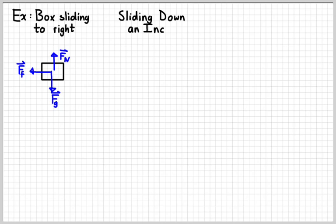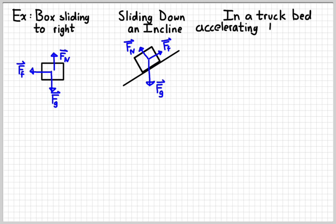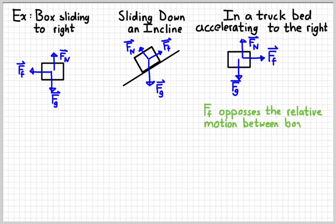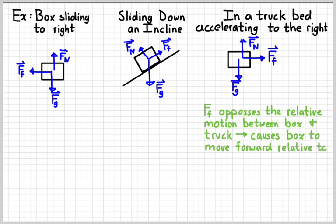Second example: suppose we have a similar box which is sliding down an incline. In that situation, friction would go up the incline — it opposes the motion of the box relative to the incline. Third example: suppose we have a truck which is accelerating to the right and we put a box in the back of the truck. Friction would be acting to the right, in the direction that the truck is accelerating. The reason is that friction is trying to keep the box at rest relative to the surface of the truck bed, opposing the relative motion between the truck and the box.